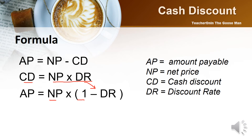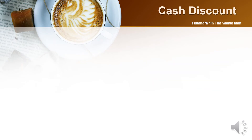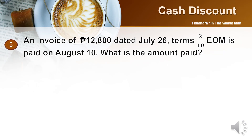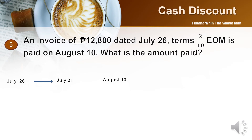Take note that the amount payable is the amount you need to settle for your obligation. Example: an invoice of 12,800 dated July 26, terms of 2/10 EOM, is paid on August 10. What is the amount paid? Let's diagram: the invoice is July 26, and since this is EOM, it transfers to July 31. Counting 10 days from July 31 brings us to August 10 — that is the discount period. Since the obligation is settled on August 10, I can avail of the 2% discount.